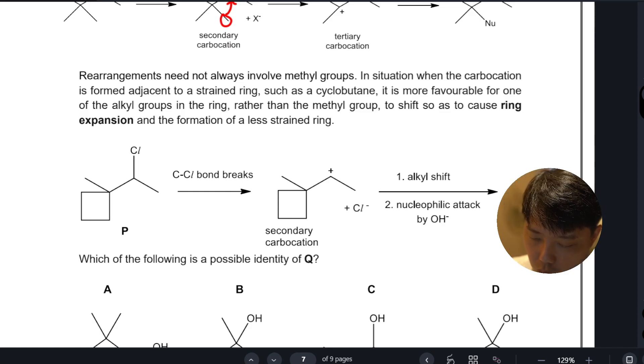So a four-member ring - this whole group will shift over here. Your carbocation will shift to the first carbon, so you end up with a cyclopentane with a methyl group here and here. Your nucleophile should attack on this carbon.